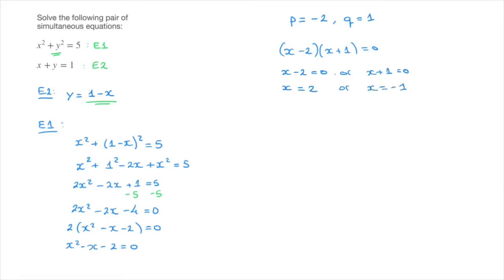And at this stage, we have two values of x, which are both parts of the solutions to this pair of simultaneous equations. But we don't stop there. Remember, we're solving for x and y. We still need to calculate the corresponding values of y for each of these two values of x. And to do that, we go back to the linear equation that we have here, and calculate y.